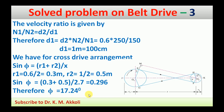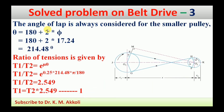The angle of lap θ for the smaller pulley is: θ = 180° + 2α = 180° + 2 × 17.24° = 214.48°. This is the angle of contact of the belt with the smaller pulley in the cross drive arrangement.